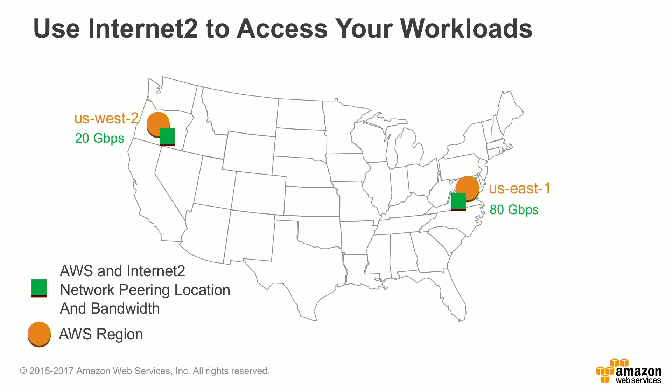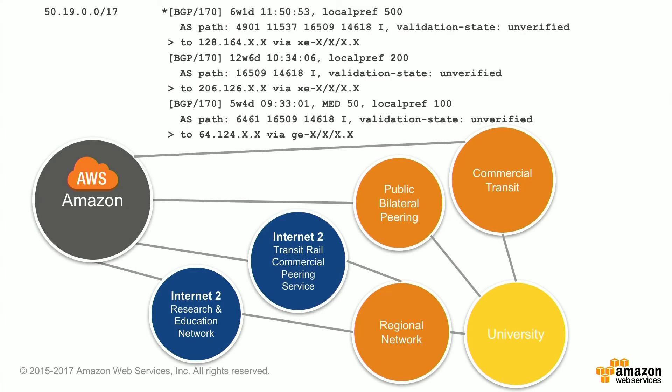Another connectivity option for education customers is the use of Internet 2 in the US. Internet 2 is currently peered with AWS in the US East 1 region at 80 gigabits per second and 20 gigabits per second in the US West 2 region. AWS and Internet 2 are continually looking to increase capacity and availability to other regions. In this example, we see multiple paths for a university to get to AWS, including regional network connections, public bilateral peering, or commercial transit. It's not a one-size-fits-all solution — different needs will have different use cases.